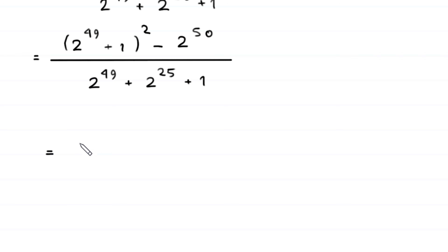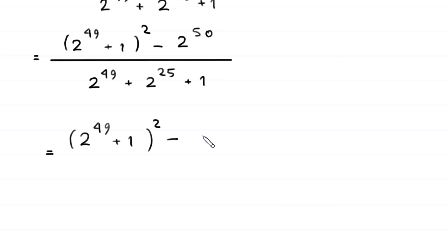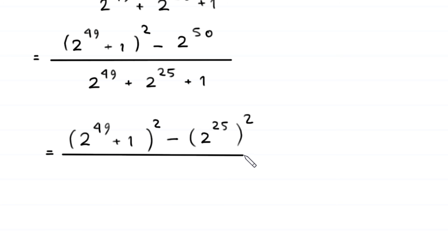Next, 2 to the power 49 plus 1 whole squared minus 2 to the power 50 can be rewritten. Since 2 to the power 50 equals 2 to the power 25 whole squared, the numerator becomes 2 to the power 49 plus 1 whole squared minus 2 to the power 25 whole squared, divided by 2 to the power 49 plus 2 to the power 25 plus 1.